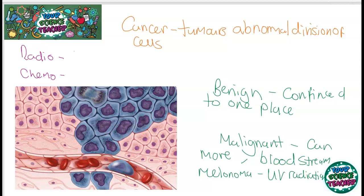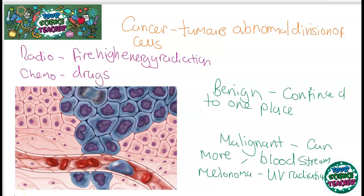There are two main treatments of cancer. Radiotherapy, where you fire high-energy radiation at the infected area. And also chemotherapy, which involves a series of drugs and has side effects such as hair loss. Chemotherapy is often quite a long process, but scientists are working hard to improve it, making drugs that are specific to a certain area. This is the end of the topic on non-communicable diseases.